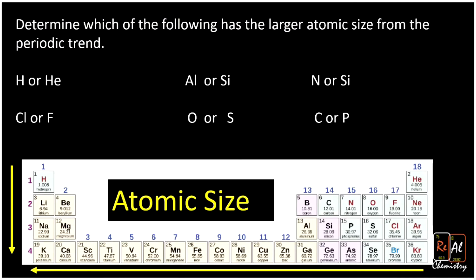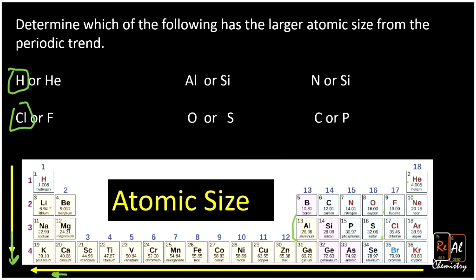Let's work some practice problems on atomic size. First, hydrogen versus helium: hydrogen is more to the left, so hydrogen is bigger. Chlorine versus fluorine: chlorine is below fluorine and has more electrons, so chlorine is bigger since atomic size increases going down. Aluminum versus silicon: aluminum is to the left of silicon, so aluminum is bigger. Oxygen versus sulfur: sulfur is lower on the periodic table, so sulfur is bigger.